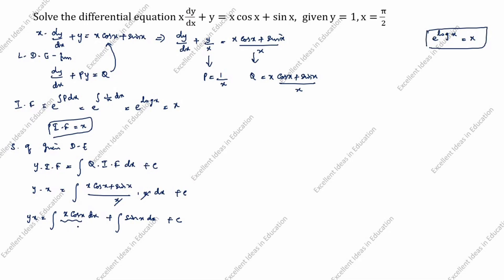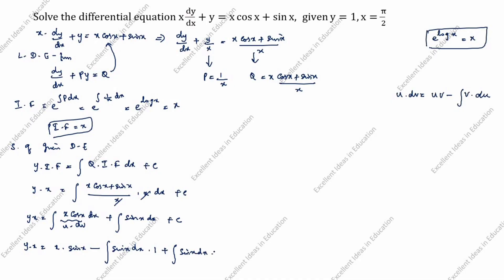We will do integration by parts for ∫x cos x dx. The formula is ∫u dv = uv − ∫v du. Here u = x and dv = cos x dx. So yx = x × sin x − ∫sin x dx, plus ∫sin x dx + c.